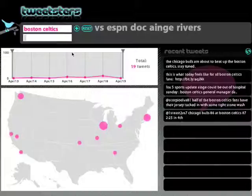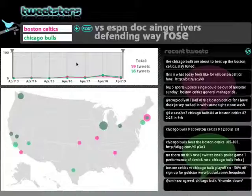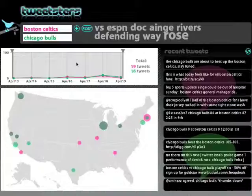Now we add Chicago Bulls into the search. It reveals a tag for Derrick Rose, a rookie who had one of his best games ever. The map shows more frequency in Chicago, who was the 7th seed and played the 2nd seeded Celtics on the road, but won.